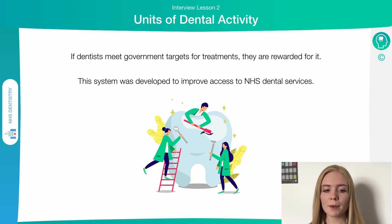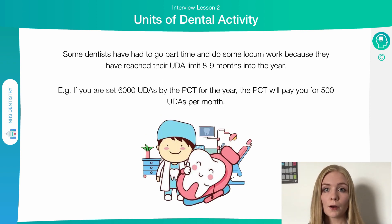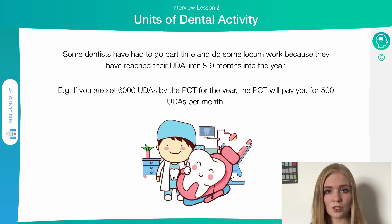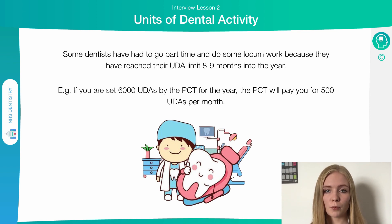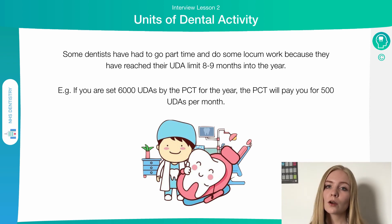This system was set up to try and make the NHS more accessible and provide dental services to all of the people in the country. There are some slight problems with UDAs, because if a dentist is given, for example, 6,000 UDAs to complete a year and they complete these before the year is out, they then have no more treatments that they can provide from the NHS and get paid for. For this reason, some dentists do additional work privately to subsidise their income, so that they're not running out of treatments and can continue practising for the full 12 months rather than running out, say, eight or nine months in.